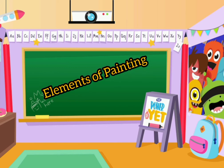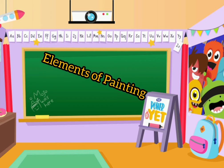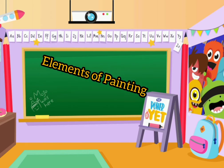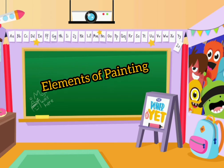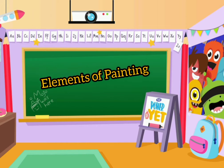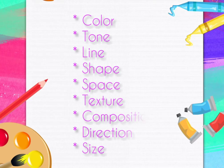We are going to talk about the elements of painting. Elements of painting are the basic components or building blocks of a painting. In Western art, they are generally considered to be color, tone, line, shape, space, texture, composition, direction and size.